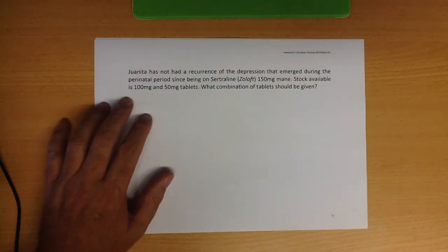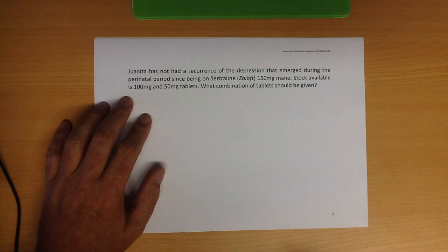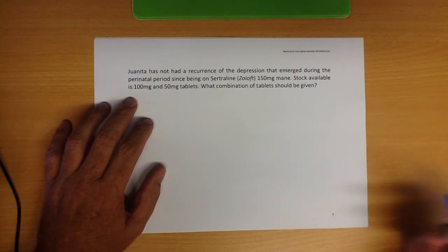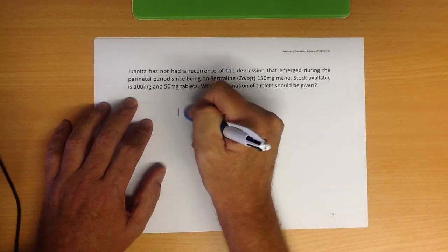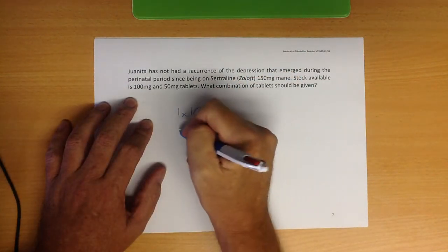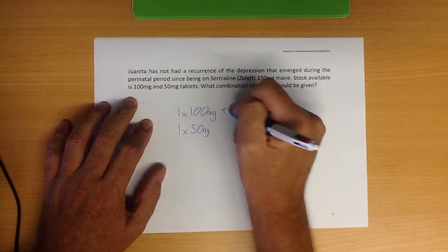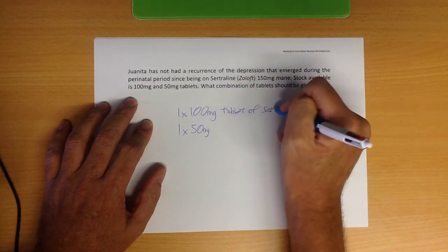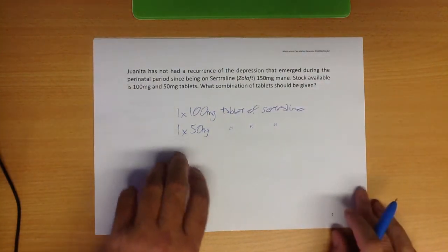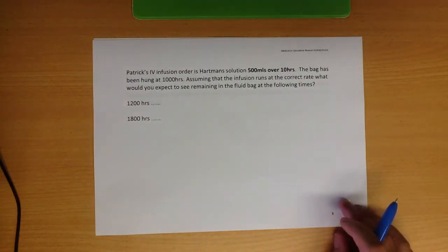Winita has not had a recurrence of depression that emerged during the perinatal period since being on sertraline 150 milligrams mane. Stock available is 100 milligrams and 50 milligrams. What combination of tablets would you give? Same deal as before. You wouldn't go breaking a 100 milligram tablet and have to give it away, would you? You'd give one by 100 milligram tablet and one by 50 milligram tablet. And just to make it really clear that the person picking up the med-calc test knows that you know what's going on, you could throw that in as well. I'd rather you gave too much information than not enough.